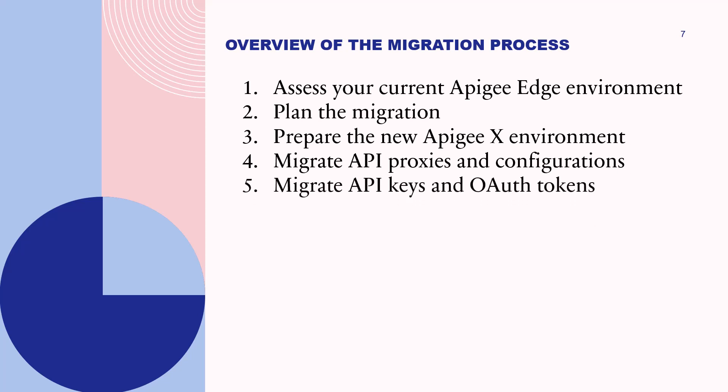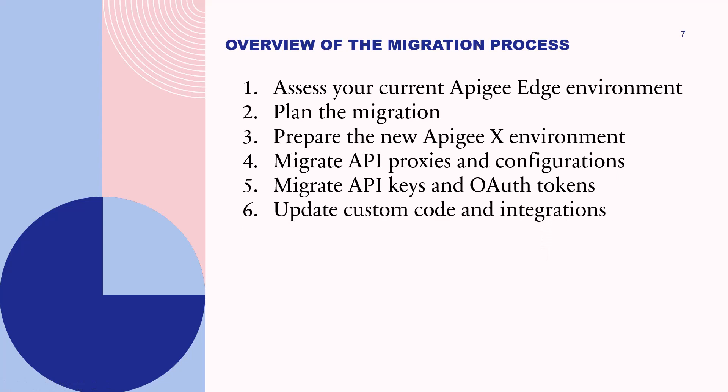Fifth, migrate API keys and OAuth tokens by transferring existing API keys and OAuth tokens from Apigee Edge to Apigee X using the Apigee X API, and be aware of any potential security implications during this process. Sixth, update custom code and integrations to be compatible with Apigee X. This may include updating SDKs, modifying API calls, or migrating from deprecated features to newer alternatives.